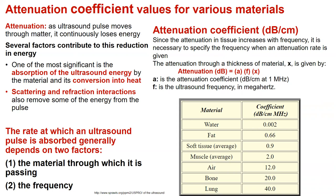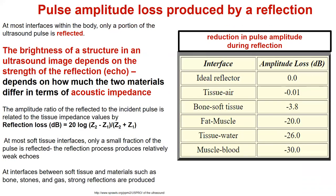The rate at which an ultrasound pulse is absorbed generally depends on two factors: the material through which it is passing, and the frequency. The brightness of a structure in an ultrasound image depends on the echo strength of the reflection, which depends on how much the two materials differ in terms of acoustic impedance.